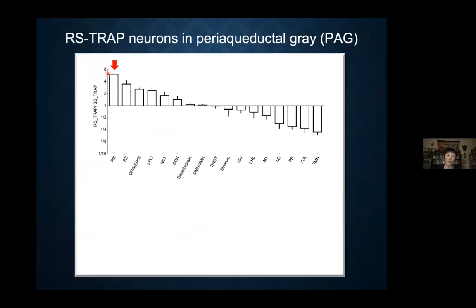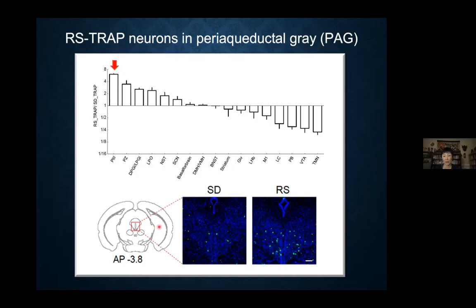When we compare these two groups of mice, we see different levels of labeling in many brain areas — some with more labeling in the recovery sleep group and some in the sleep-deprived group. The region with the highest relative expression in the recovery sleep group is the ventral region of the periaqueductal gray. You can see that there are many more neurons in the recovery sleep group than the sleep-deprived group.